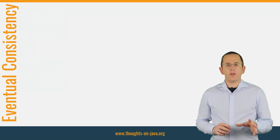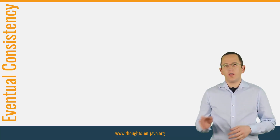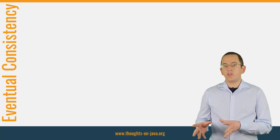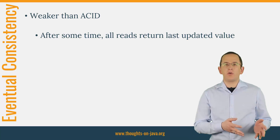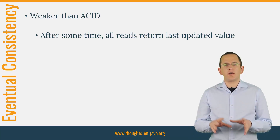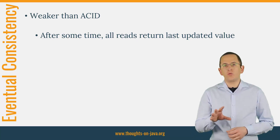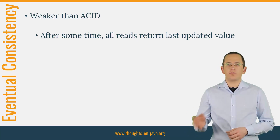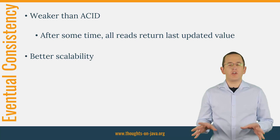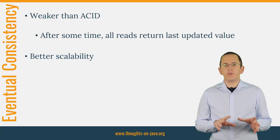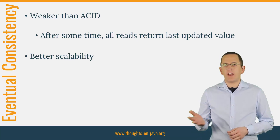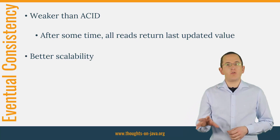ACID transactions are not the only way to achieve that. A lot of modern applications rely on a concept called eventual consistency. While ACID transactions ensure that your system is always in a consistent state, eventual consistency only ensures that it will be consistent at some point. That means that if you stop changing your data and wait for some time, all read operations will return the last updated value. That's a much weaker guarantee, but it makes scaling and high availability much easier. Eventual consistency doesn't require you to keep all involved systems in sync all the time. It's ok if one or more systems get updated asynchronously, which improves the scalability and robustness of your system.